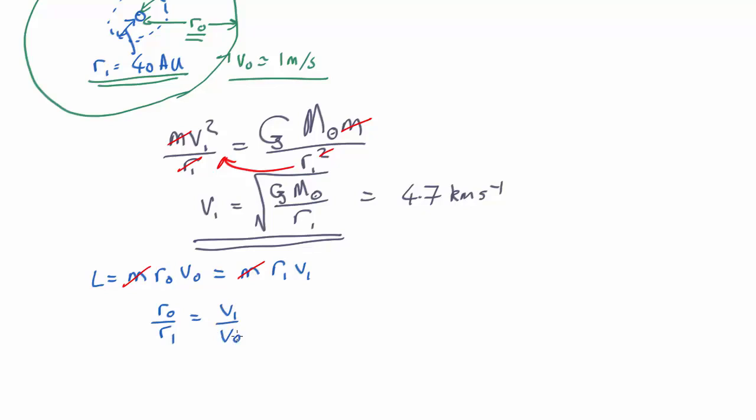So the ratio of the radii is the reciprocal of the ratio of the velocities. Now we know that we want v0 as 1 m per second as opposed to 4,700. So that ratio is 4,700. 4.7 km per second divided by 1 m per second. So 4,700.